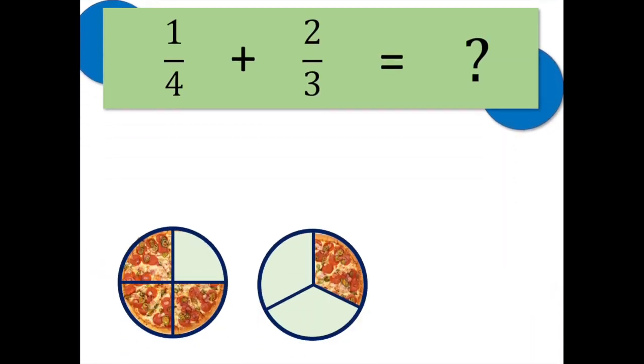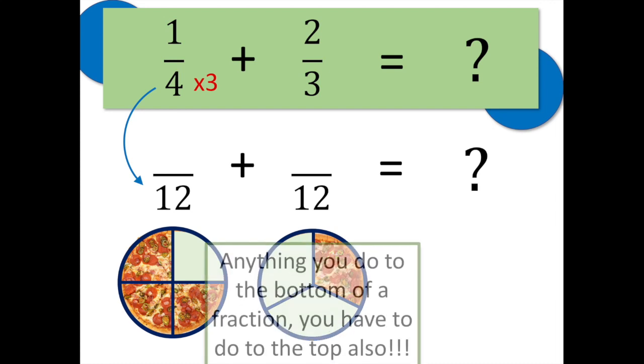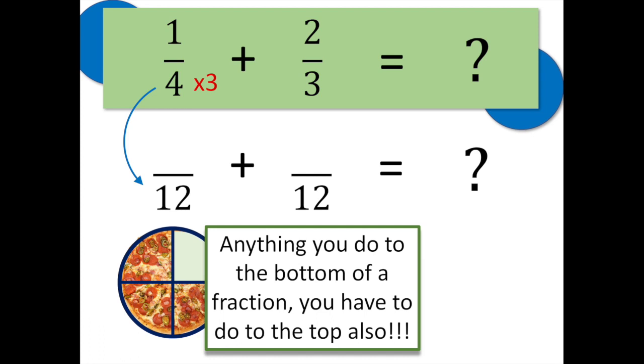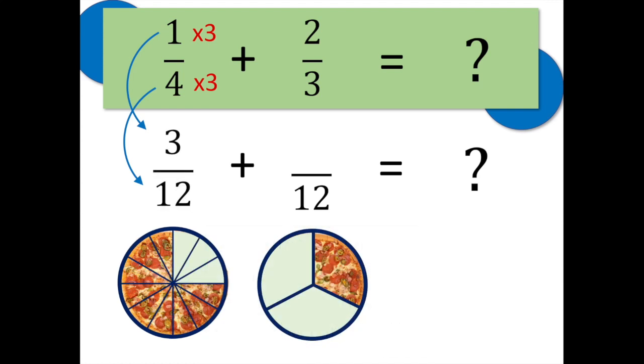Back to our problem. It was one-fourth plus two-thirds, but now we're going to rewrite the problem with 12 as the denominator. The fractions will look different, but still represent the same amount. Watch this. First step, how do we get from four to 12? We multiply by three. Now, in order to make sure the fraction still represents the same amount, we have to remember this: anything we do to the bottom of the fraction, we have to do to the top also. So if we multiply the bottom by three, we need to multiply the top by three. One times three is three, and I've transformed the fraction. And check this out: three of the 12 slices are colored, so it's three-twelfths, but it's still one-fourth, too. Neat, huh?